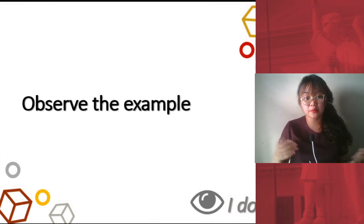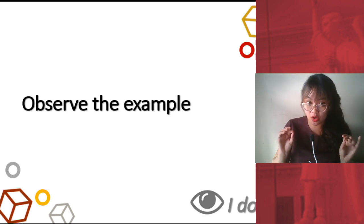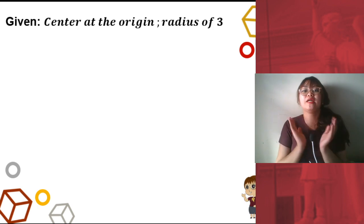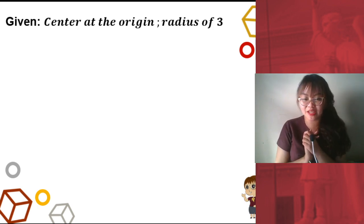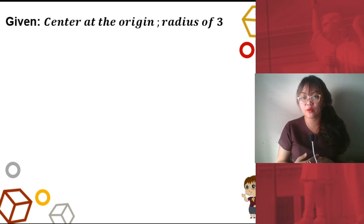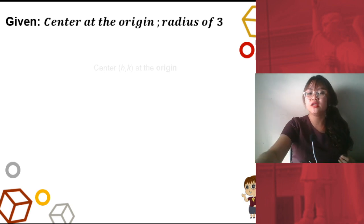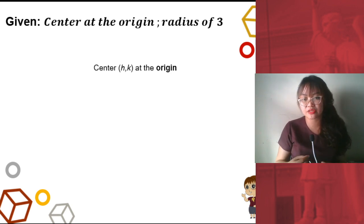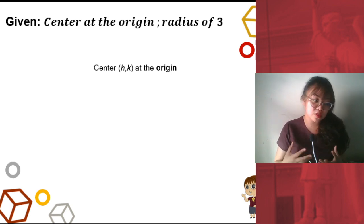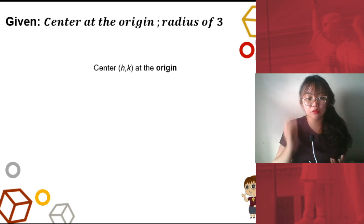In this first example, I would be solving it and I want you to observe. What we're given is the center at the origin and the radius of 3. We must identify the standard form of equation using the formula. When we say center (h, k) is at the origin, what would be the coordinates of that point?